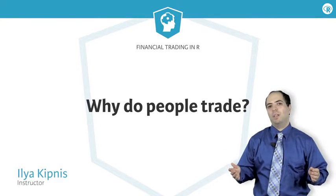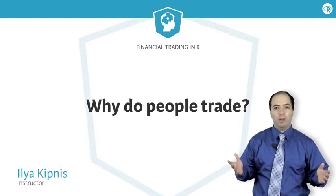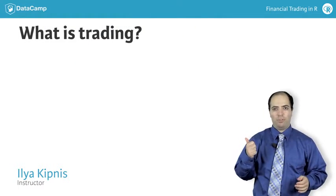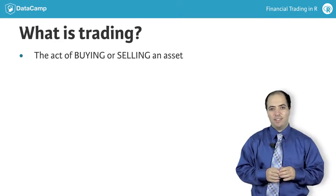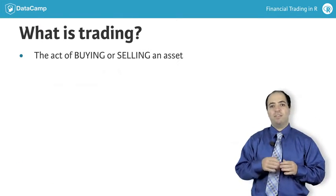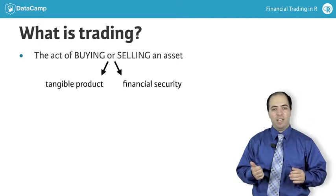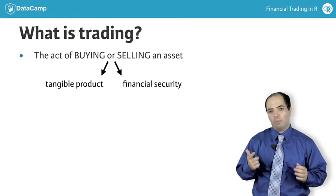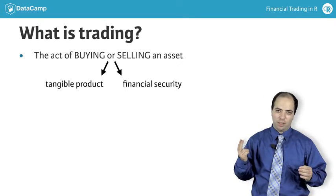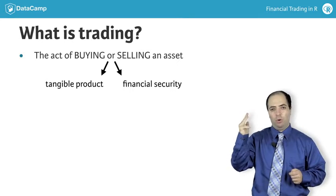Before introducing Quantstrap, let's establish the reasons people trade and what a trade is. First and foremost, a trade is simply the act of buying or selling an asset, whether that's a financial security such as a stock — that is, ownership of a company's equity — a bond, that is, ownership of a company's or government's debt, or a tangible physical product such as commodities like gold, oil, metals, and corn.